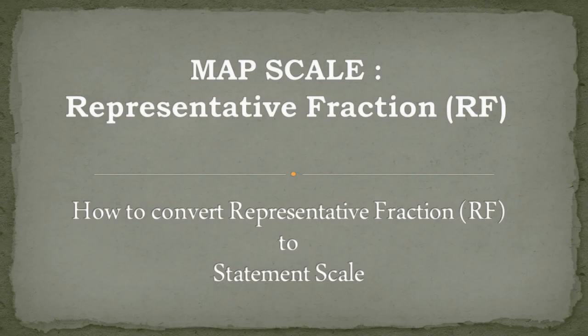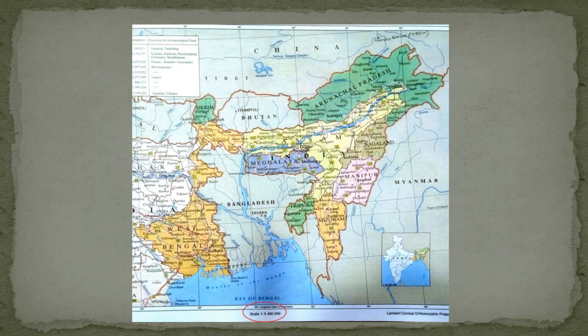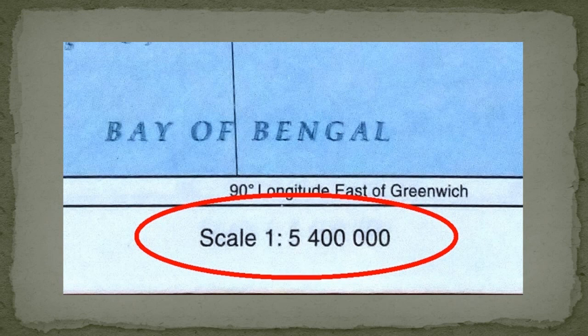Hi, today I am presenting a short tutorial on representative fraction and the method to convert representative fraction into a statement scale. Let's start. First of all, let me show you a map. I have taken this image from an atlas. You can notice that at the bottom of the map some numerical figure is written. It's written: scale 1 is to 5,40,000, that is 1 is to 54 lakhs. Basically, it is the scale of the map which is in the form of representative fraction. Representative fraction is a way to represent map scale.